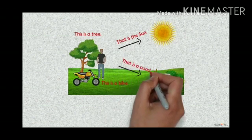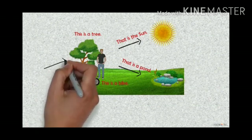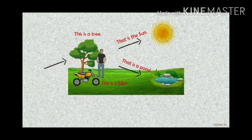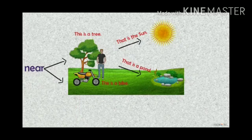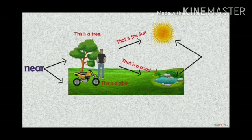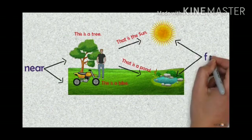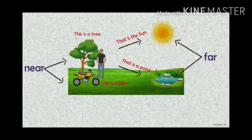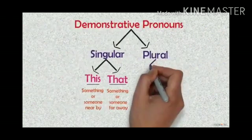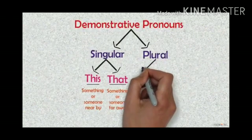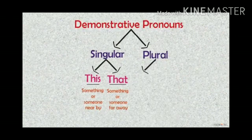Here, the tree and bike are near, so we used 'this.' The Sun and pond are far away, so we used 'that.' Next, we look at plural demonstrative pronouns.